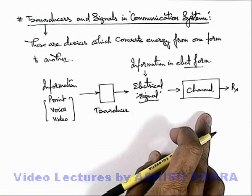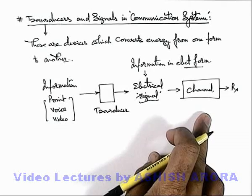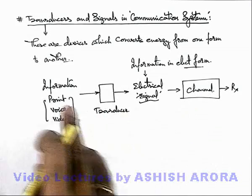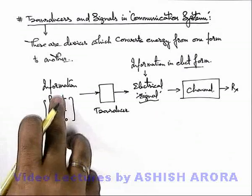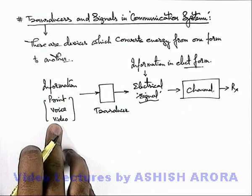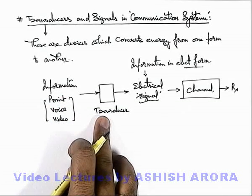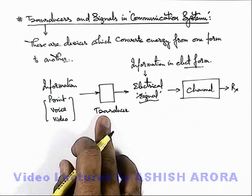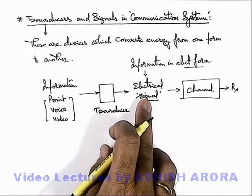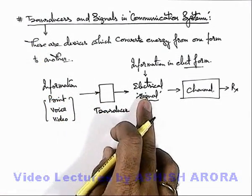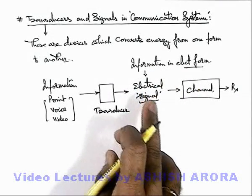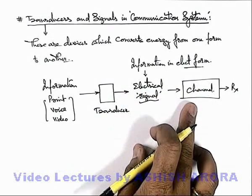It is delivered to the information receiver. The very first thing is that information in human-readable or understandable form is given to the transducer. This transducer is a device which converts the information into a signal — the information in electrical form — which can be transmitted over the channel.